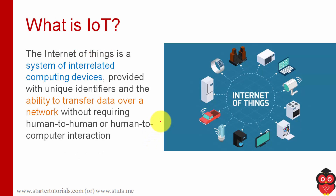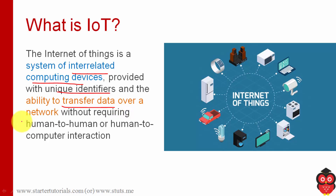Let's start with Introduction to IoT. IoT is a collection of interrelated computing devices. These devices will have unique identifiers and they will have the ability to transfer data over a network. Different things will be communicating, and these things can be sensors or other kinds of devices.